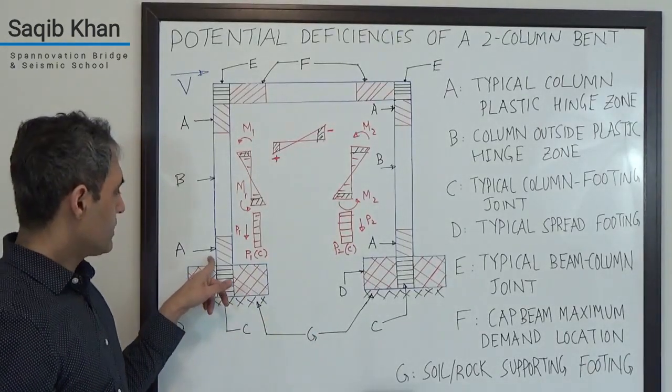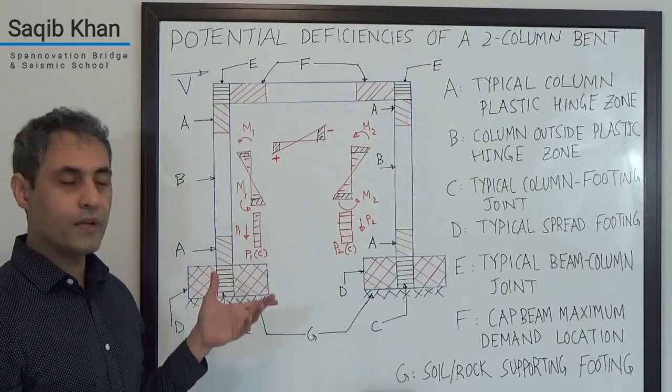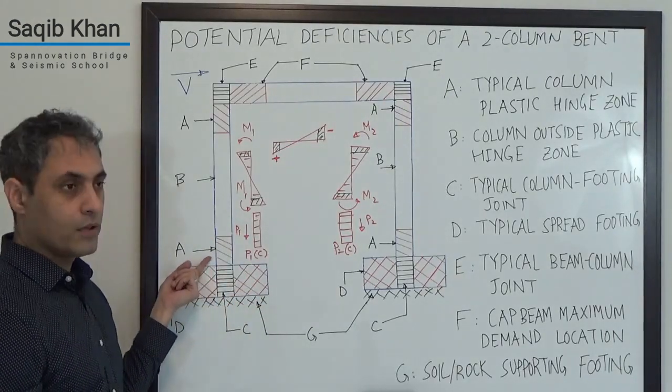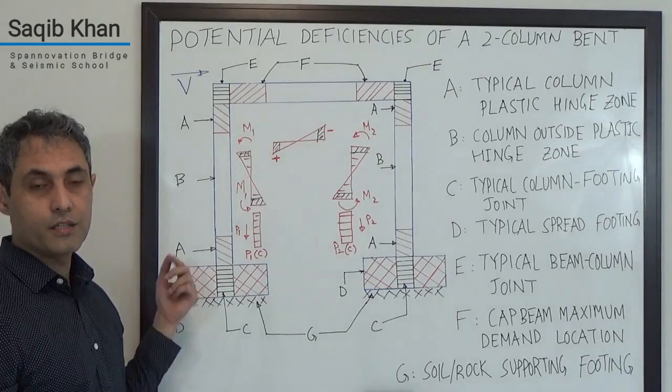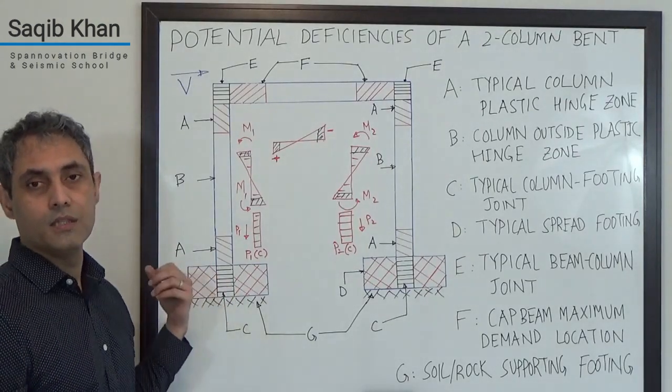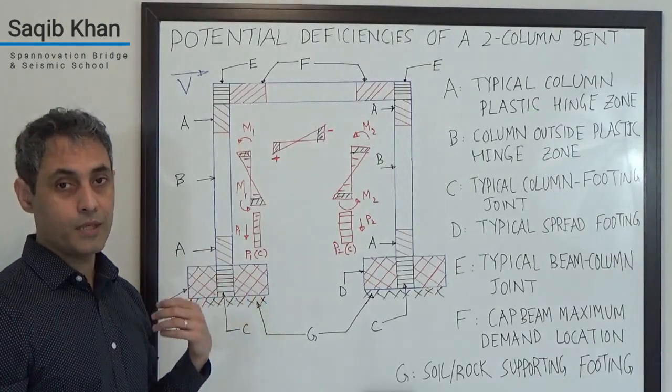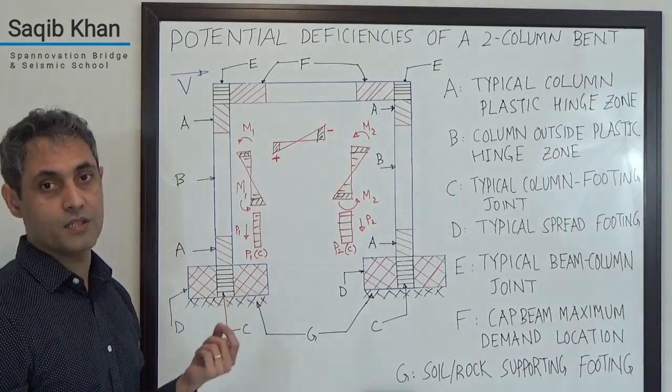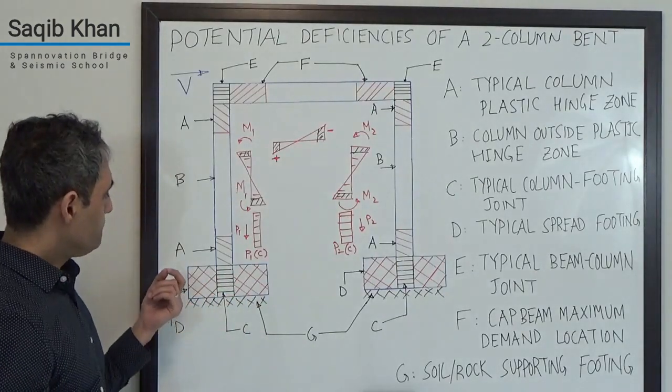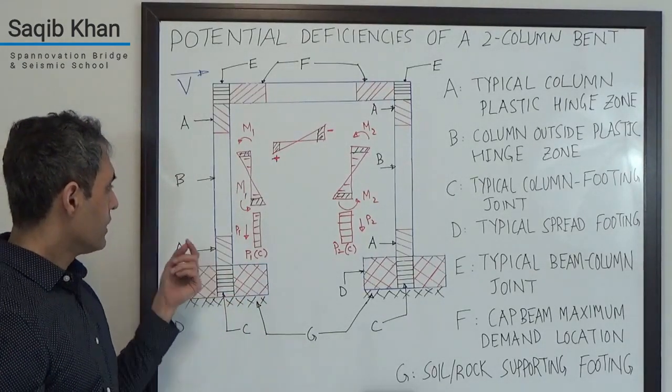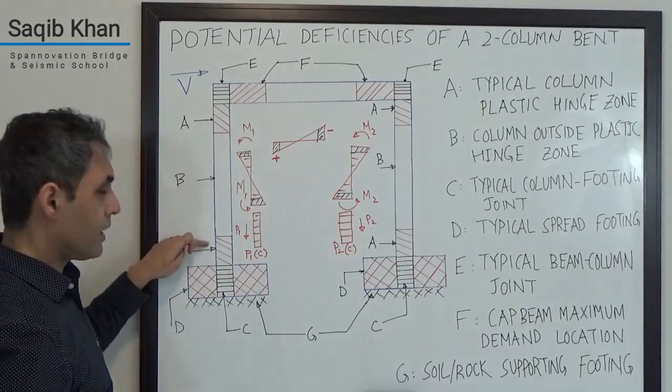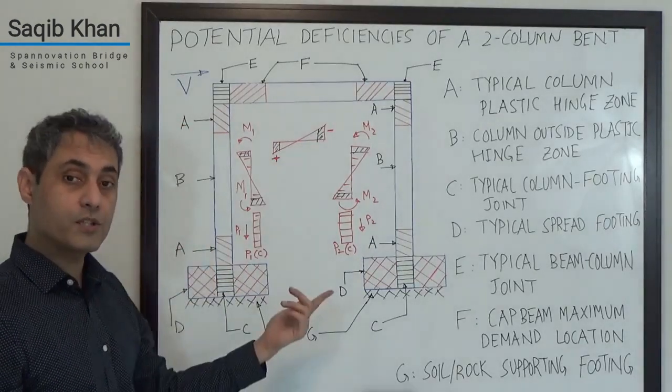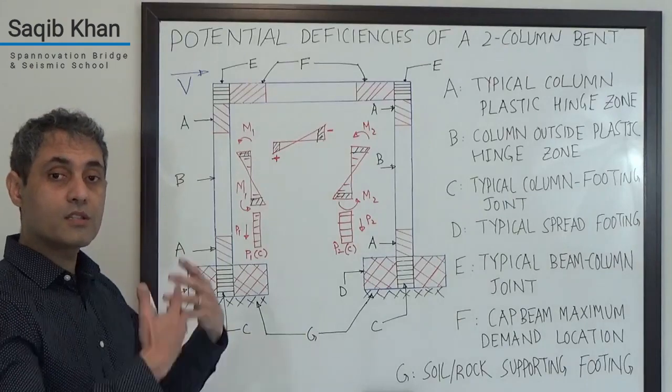So for example, for a critical or lifeline bridge, you may not be allowed to have much plasticity in here. You may be allowed to have a little bit of yielding in your rebar but not a lot. The strain limits are pretty stringent. So in that case, you want to have enough rebar but you don't want to have too much.